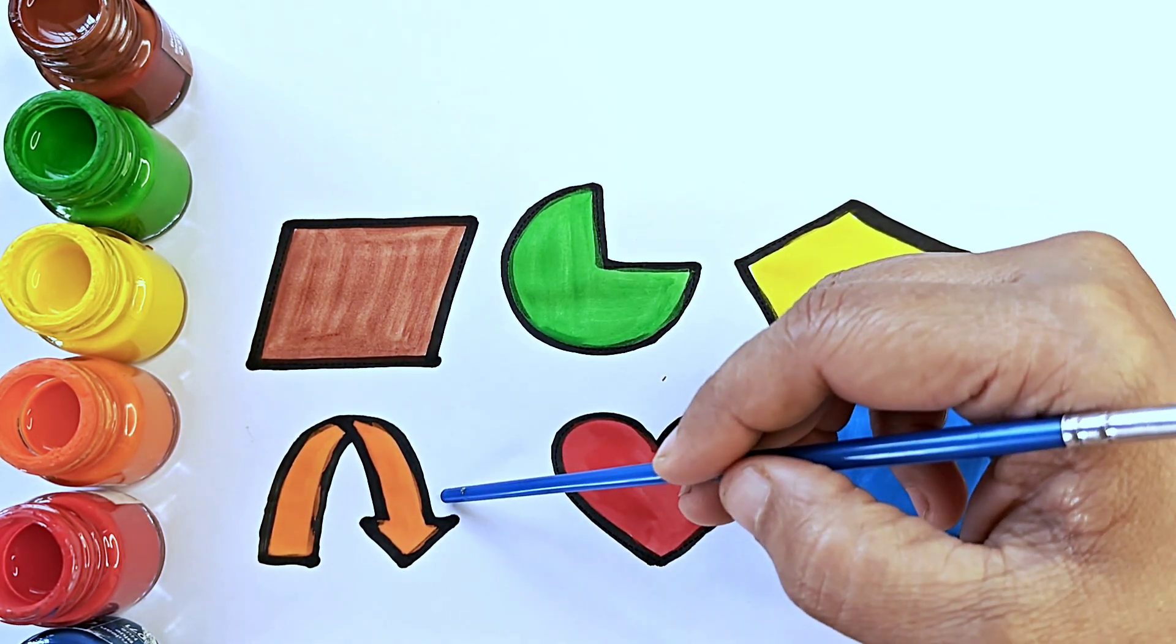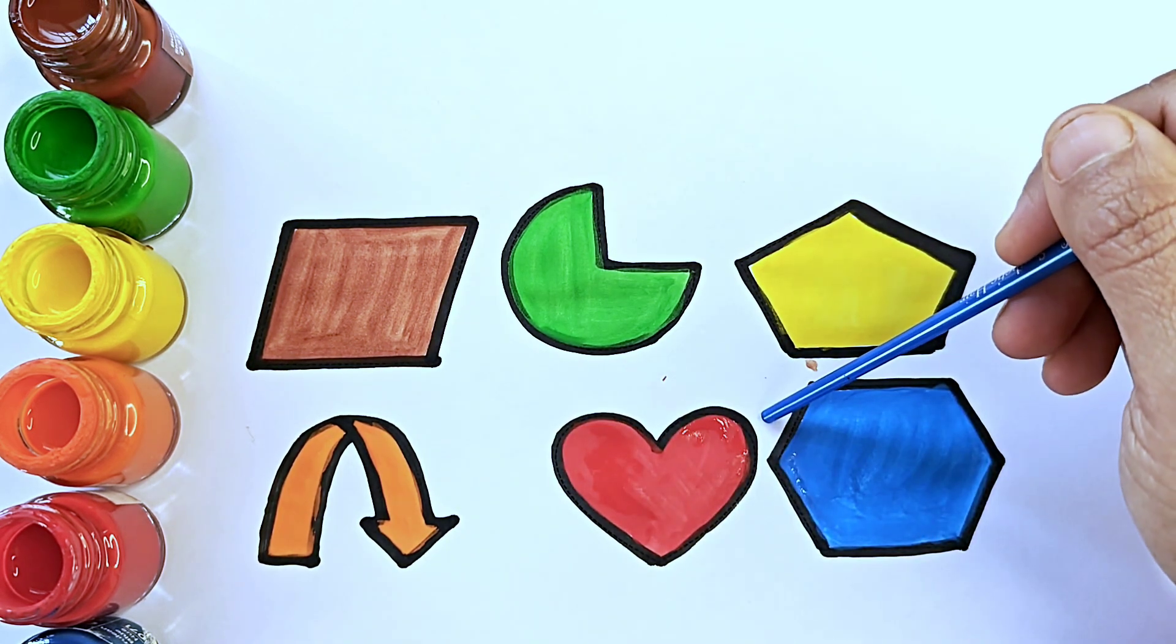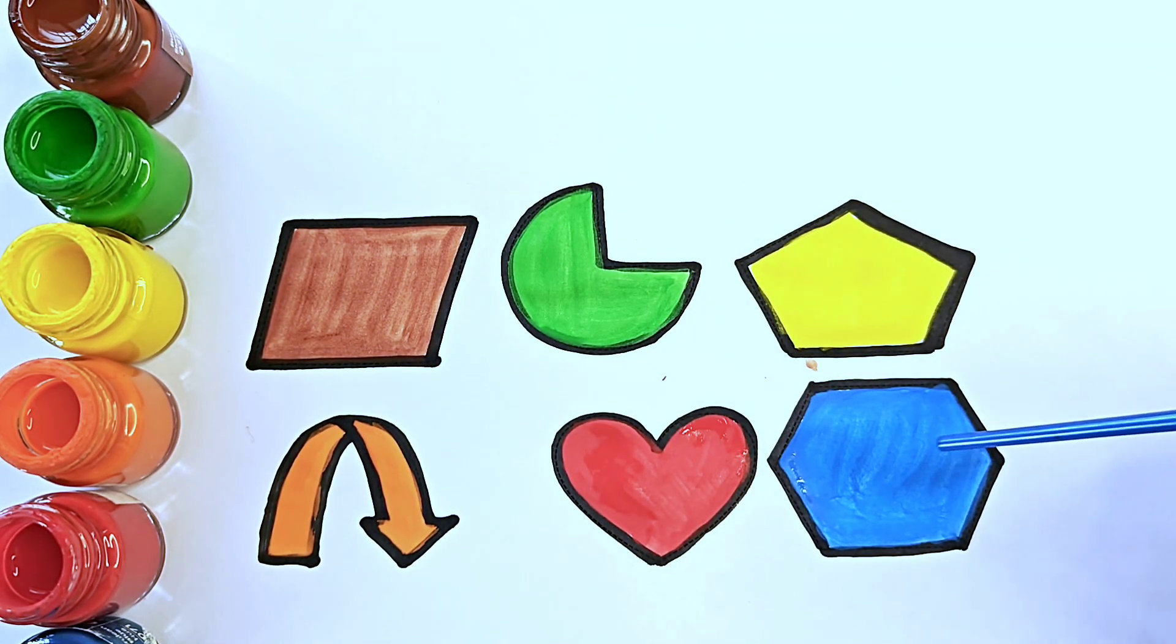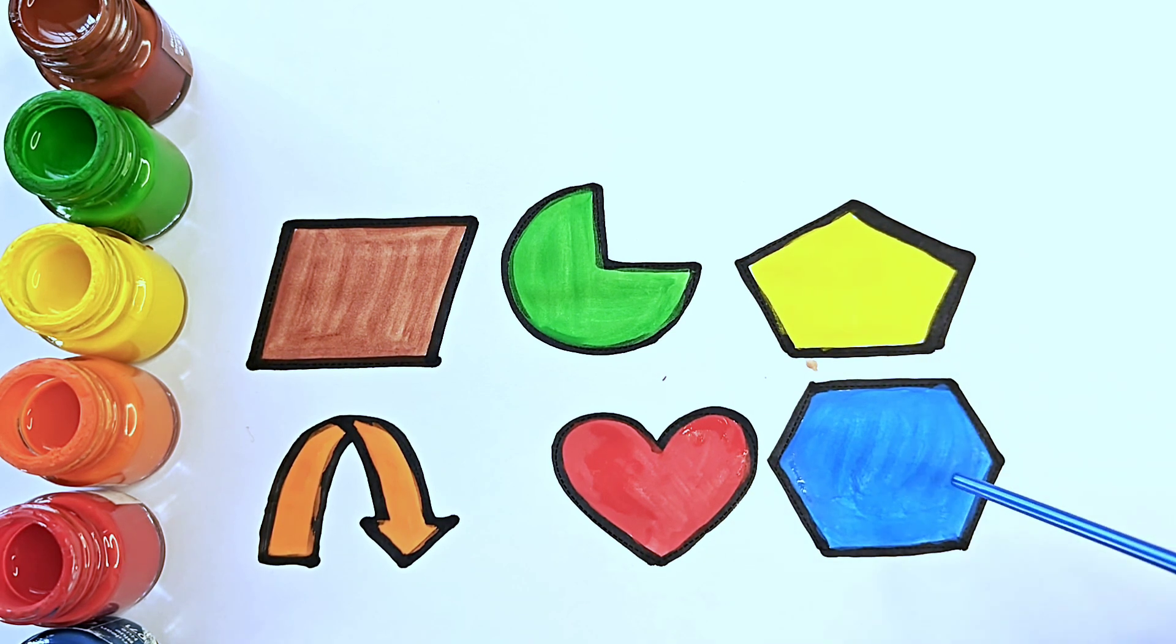This is curved down arrow. It is a symbol. This is heart. It is a shape. This is hexagon. It has six sides. It is a 2D shape.